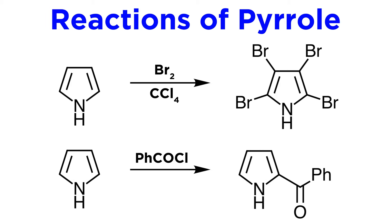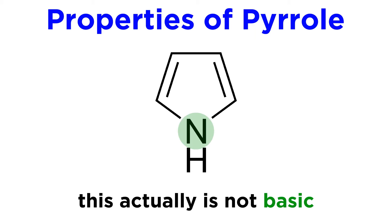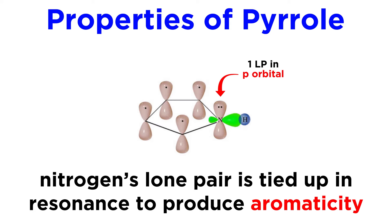Also like furan, Friedel-Crafts acylation happens easily even without Lewis acid activation. An interesting feature of pyrrole is that despite the nitrogen atom, it is not basic. In fact, if protonated by a very strong acid, it actually occurs at carbon 2. This is because the lone pair on the nitrogen is tied up in resonance to produce aromaticity, and is thus not readily available as a proton acceptor.